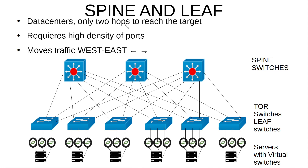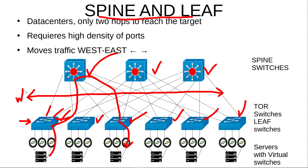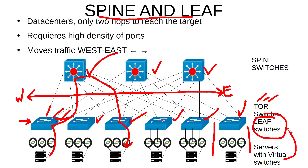If you have an on-premise data center, you should use the spine-and-leaf topology. The spine switches sit at the top, and each leaf switch connects to every single spine switch, so high-density ports are required. This topology guarantees that any server communicating with another server will only traverse two hops in any direction, making it ideal for east-west traffic — traffic between servers in the same data center. At the top of each rack sits a top-of-rack switch that becomes your leaf switch, and with virtualization, servers will have virtual switches connected to your leaf switches.